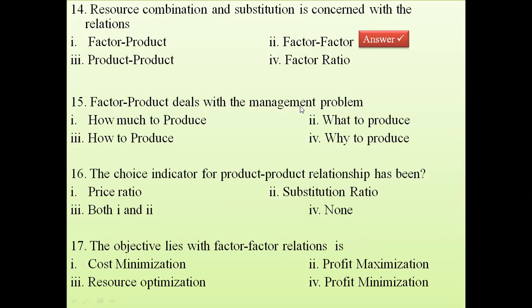Question 15: Factor-product deals with the management problem of how much to produce. If you remember the table covered in the lecture on factor-factor, factor-product, and product-product relationships, you can easily answer any question whether direct or indirect.